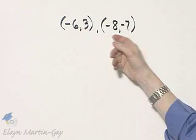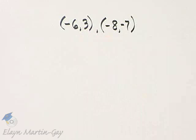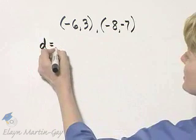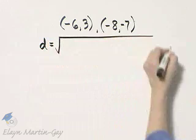Let's find the distance between these two ordered pairs on the coordinate plane, so we will use the distance formula. Remember, distance is equal to the square root of...